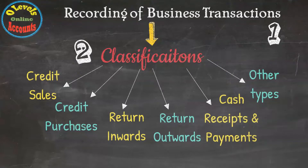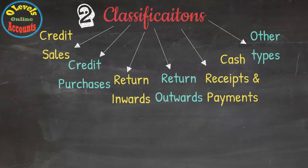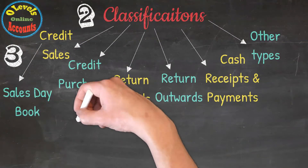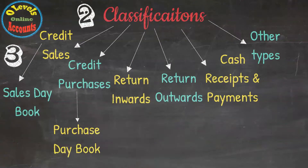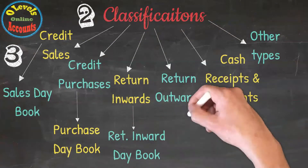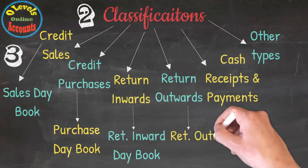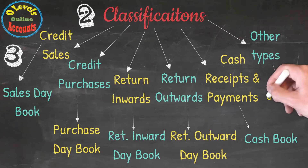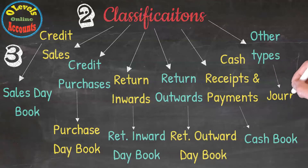After the classification of transactions, we have a third step, which is the development of Day Books. Credit Sales are recorded in the Sales Day Book, Credit Purchases in the Purchases Day Book, Return Inwards in the Return Inwards Day Book, Return Outwards in the Return Outwards Day Book, Cash Receipts and Payments in the Cash Book, and other types are recorded in the General Journal.